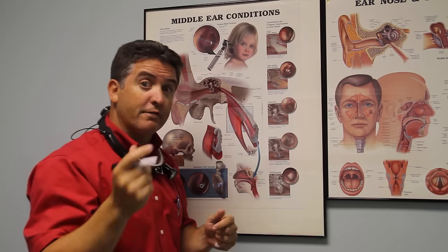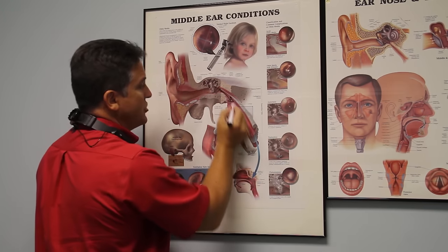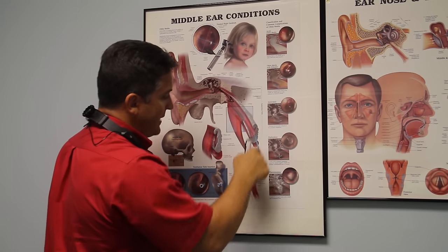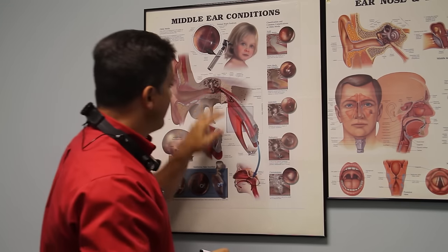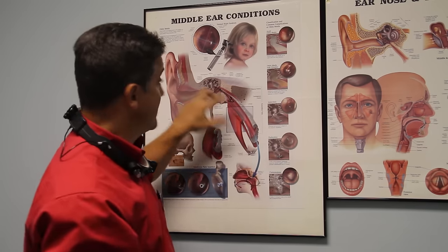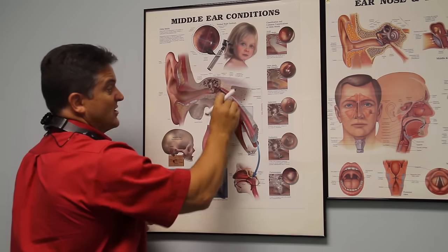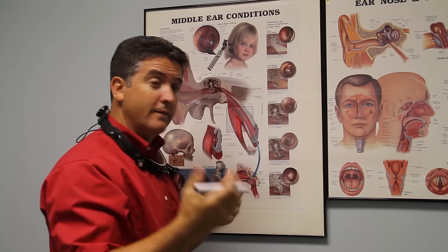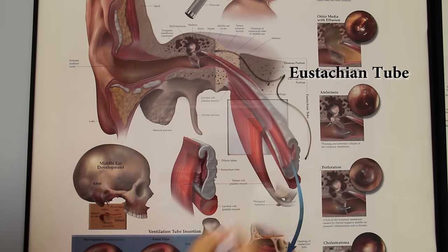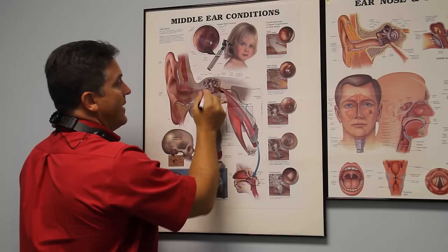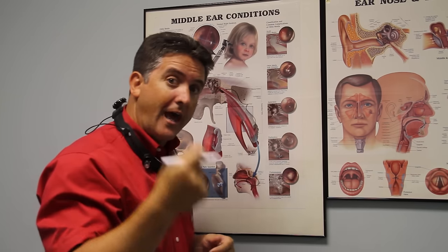Typically, that fluid is going to be drained out of the ear by the eustachian tube, down and out into the back of the nose. But if the eustachian tube is swollen, or if it's not working because a child is young and hasn't properly developed yet, then that eustachian tube will not allow fluid to drain, and fluid then is stuck in the middle ear cavity.